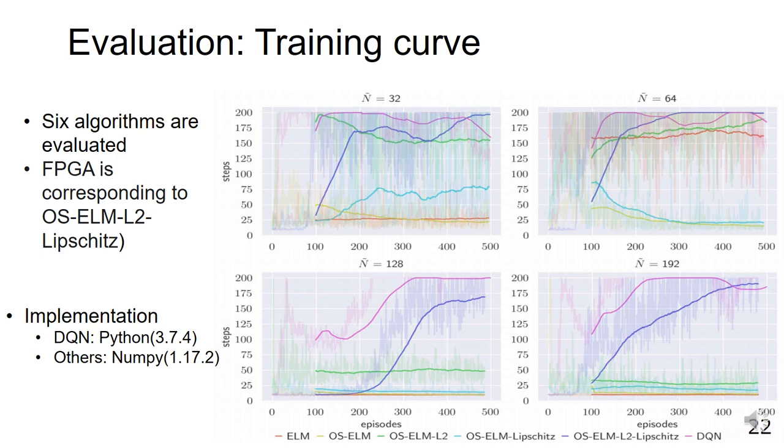The top-left graph shows the results when N is 32. In this case, in addition to DQN, OS-ELM-L2 and OS-ELM-L2-Lipschitz acquire actions that keep the inverted pendulum inverted longer.